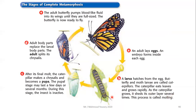After its final molt, the caterpillar forms a chrysalis and becomes a pupa. The pupa stage may last a few days or several months, during which the insect is inactive. Then the adult body parts replace the larval body parts — the adult splits the chrysalis, emerges, and pumps fluid into its wings until they are full-sized and the butterfly is ready to fly.